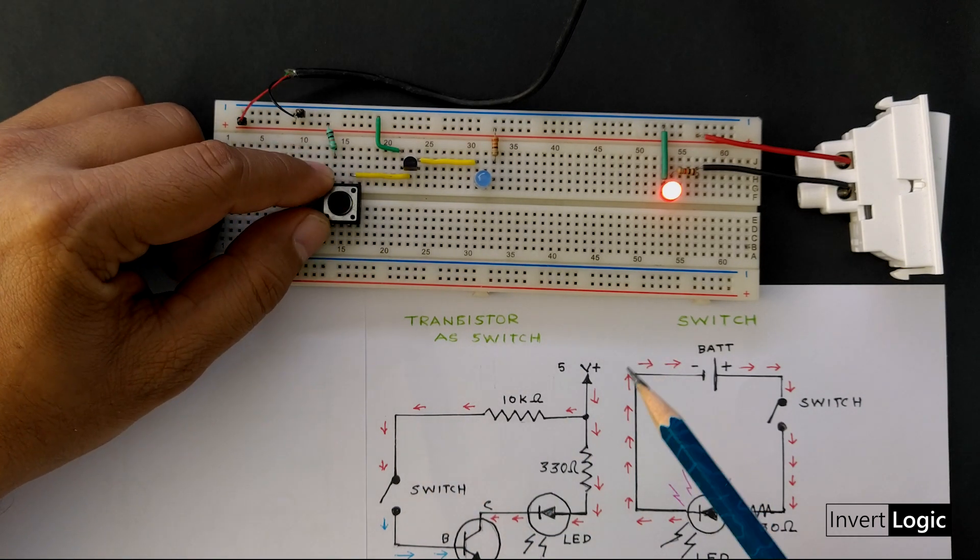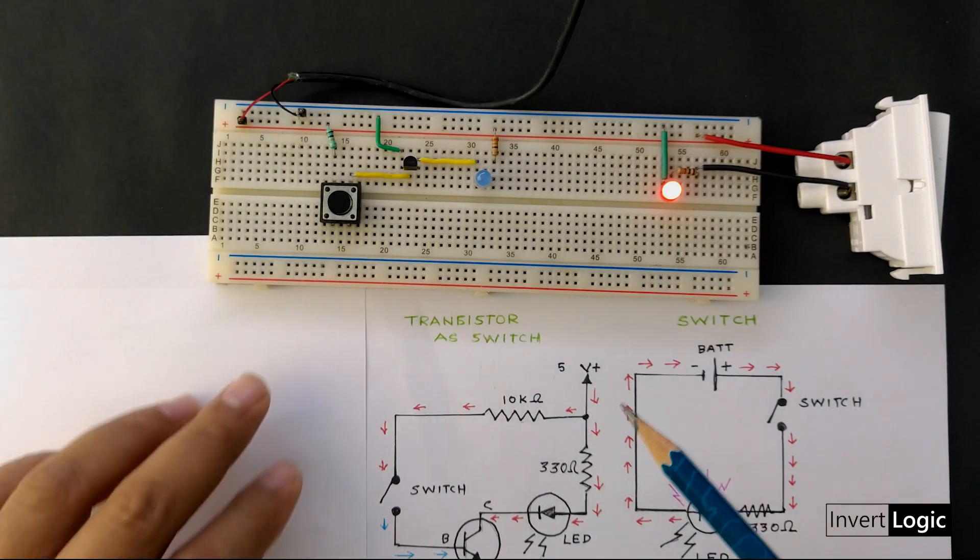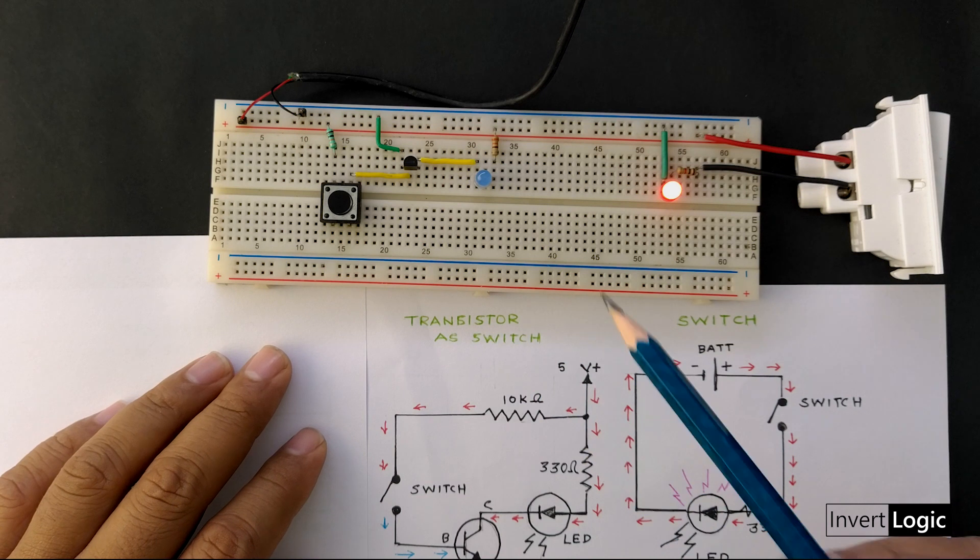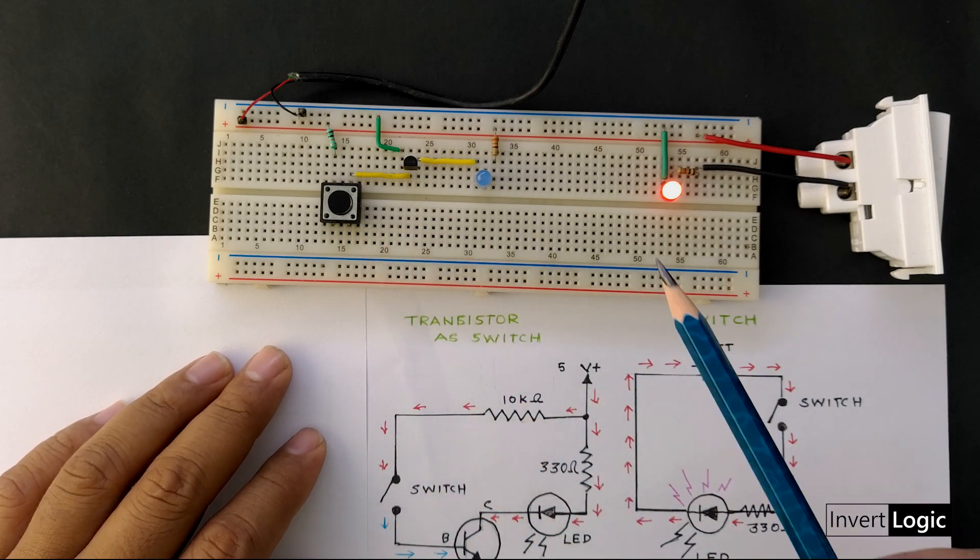So for this example, we will use a small switch as alternative to generate the signal. Later, I will also show you what I mean by signal and how we can use different components to make that signal happen automatically.